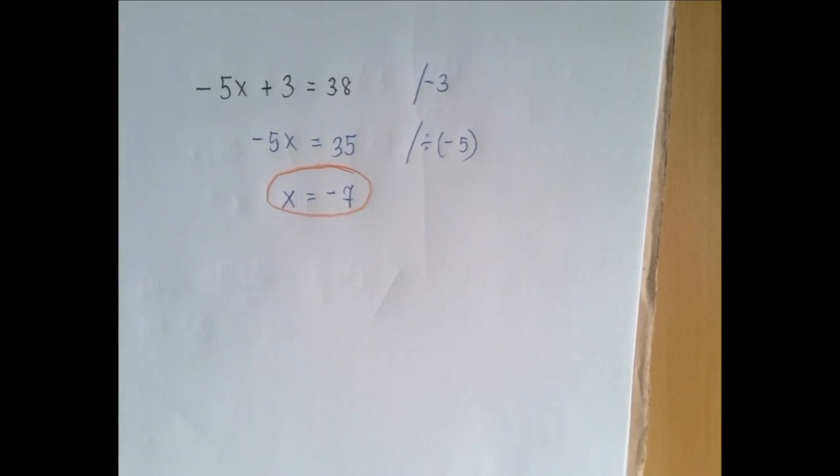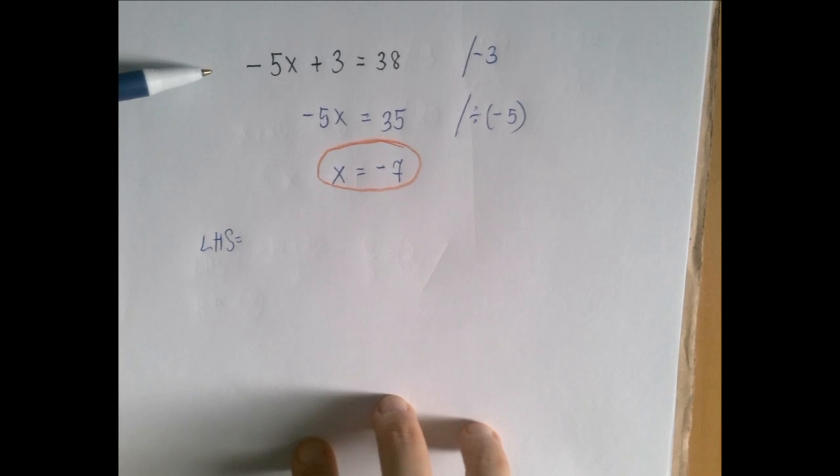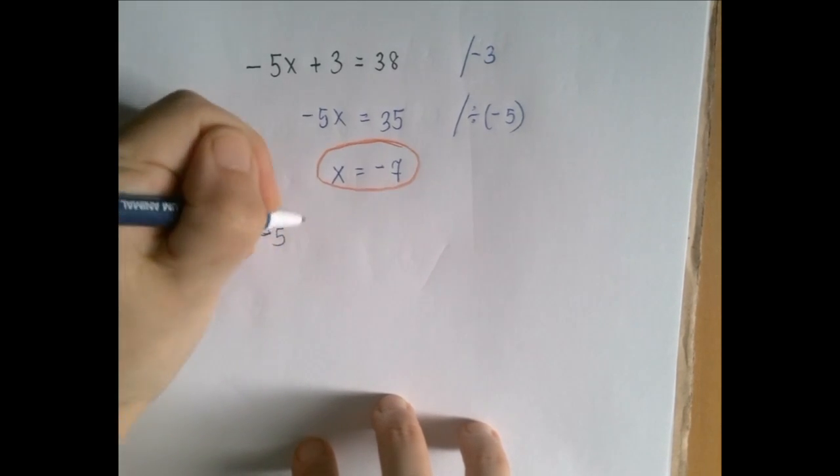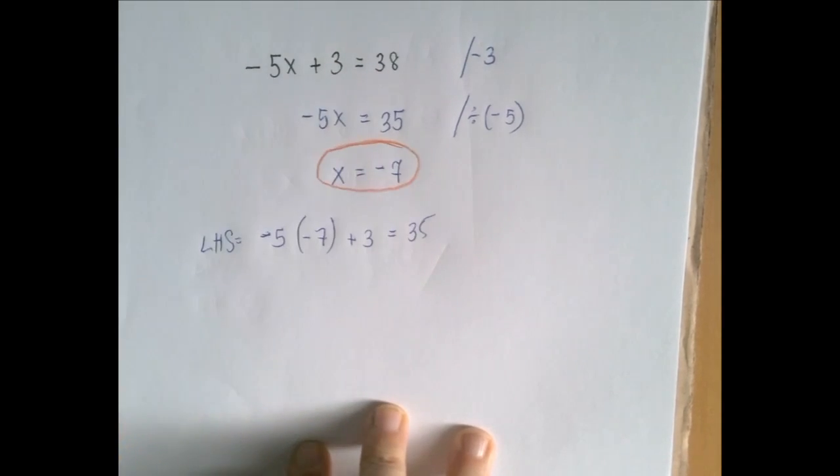So we think that our solution is negative 7. We should always check. So if x is negative 7, the left-hand side, which is negative 5x plus 3, will become negative 5 times negative 7 plus 3. Negative 5 times negative 7 is plus 35.